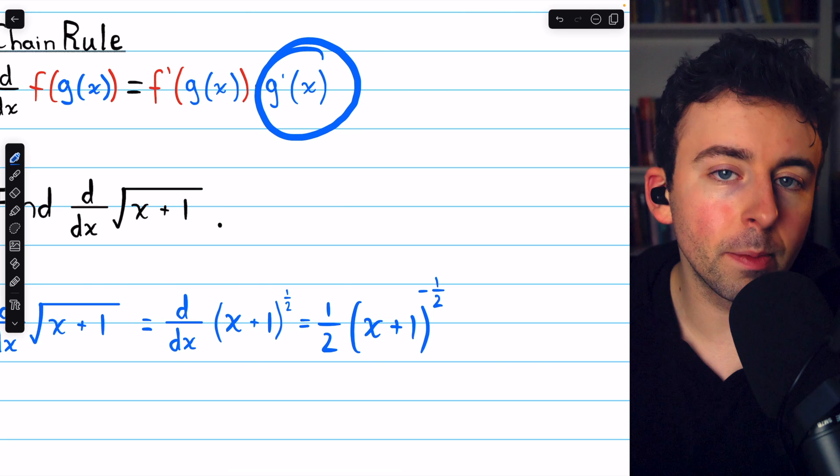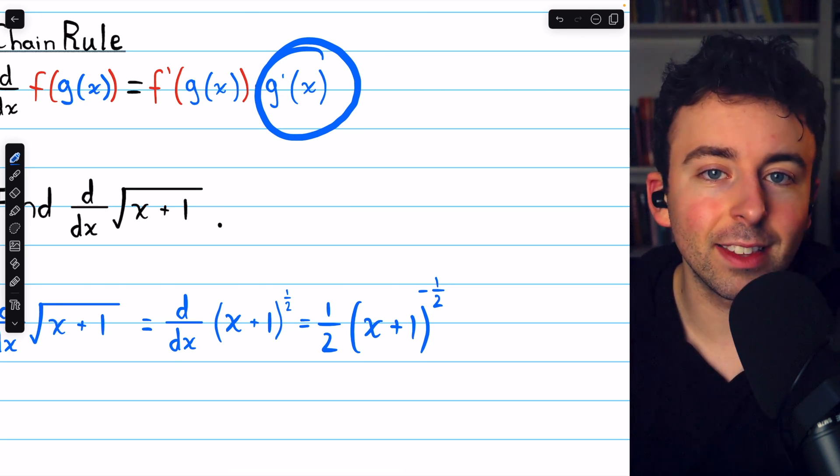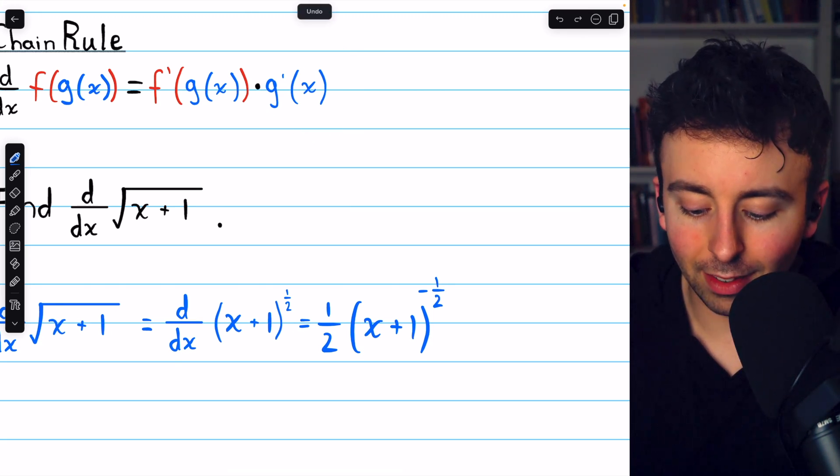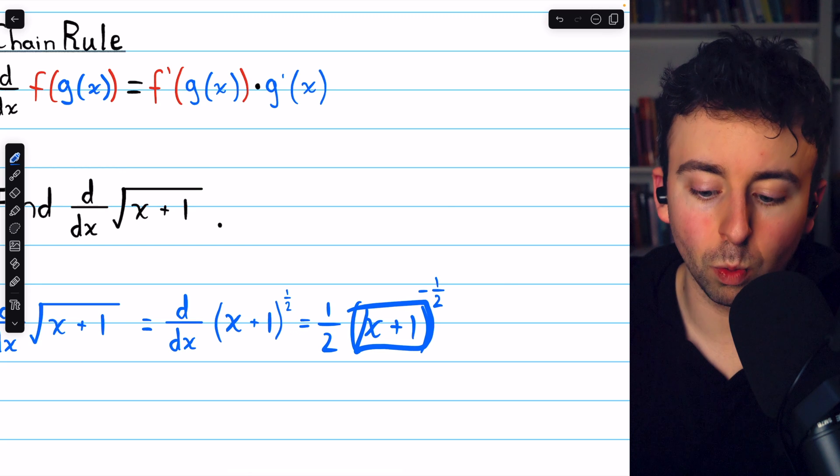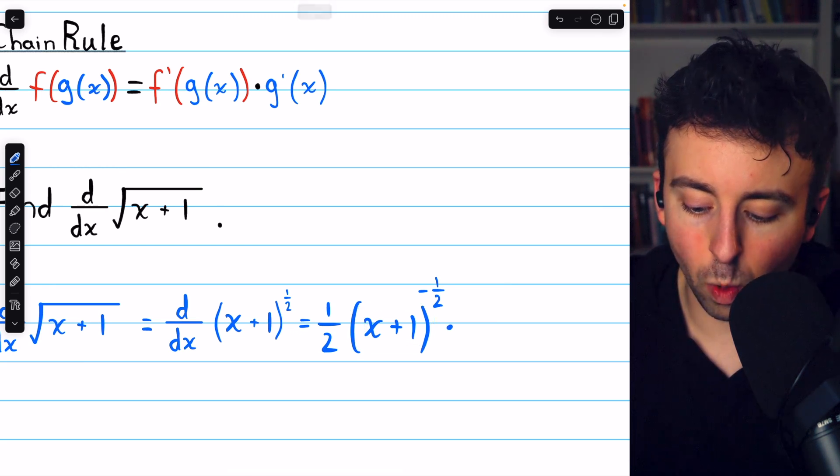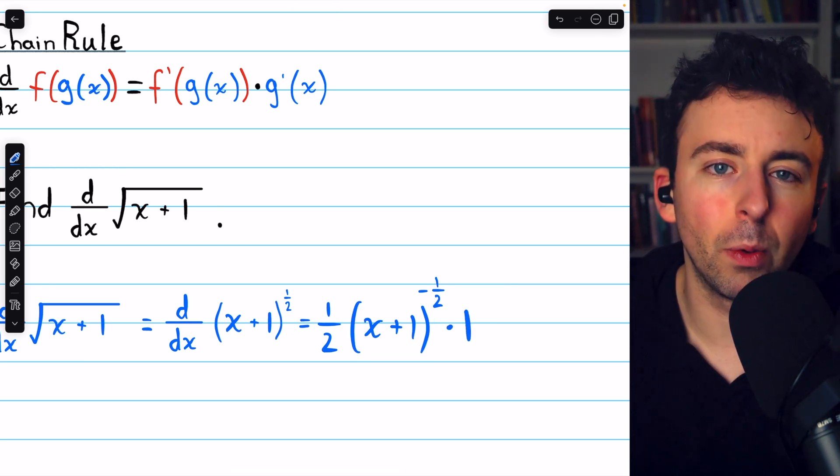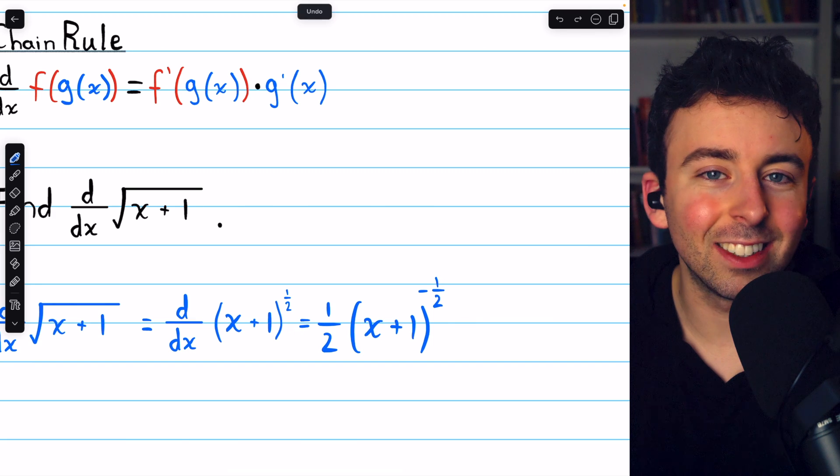Then by the chain rule, we also need to multiply by the derivative of the inside function. But in this case, the inside function, x plus 1, has a derivative of 1. So we would just multiply by 1, and we don't really need to write that.